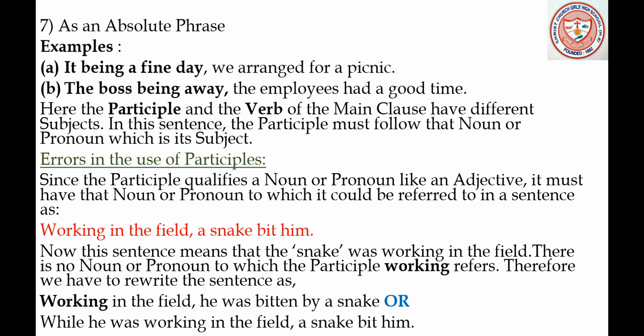Now we shall study errors in the use of participles. Since the participle qualifies a noun or pronoun like an adjective, it must have that noun or pronoun to which it could be referred to in a sentence. Example of a wrong sentence: 'Working in the field, a snake bit him.' This sentence is wrong because it means that the snake was working in the field, which makes no sense at all.